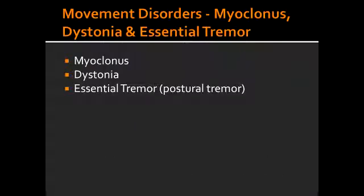Myoclonus. What is myoclonus? Myoclonus is a sudden, brief, uncontrolled muscle contraction. Name some of the myoclonus contractions. Myoclonus contractions include jerks and hiccups. What conditions can lead to myoclonus movements? Myoclonus movements can happen in metabolic abnormalities such as in renal and liver failure.